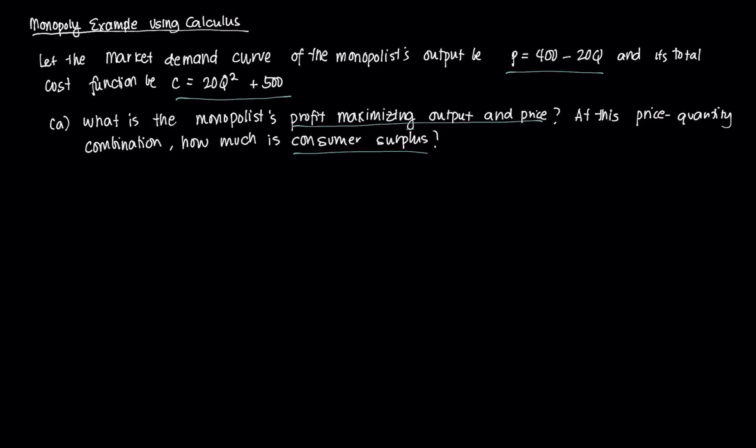To solve for pm and qm, we use the first order condition which is MR(q) = MC(q). We have p = 400 - 20q, so to get marginal revenue we need total revenue. Revenue equals 400q - 20q². This is revenue, just equal to price times q.